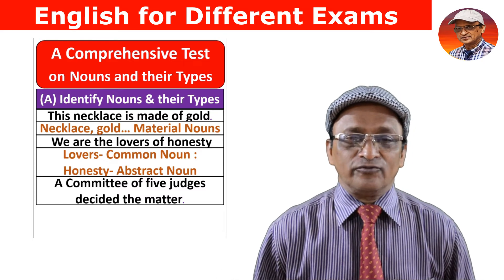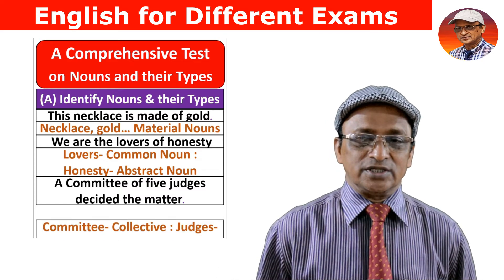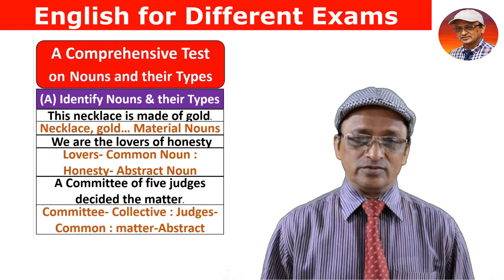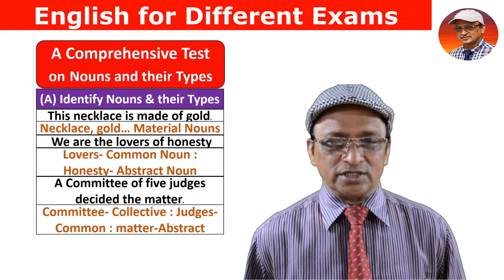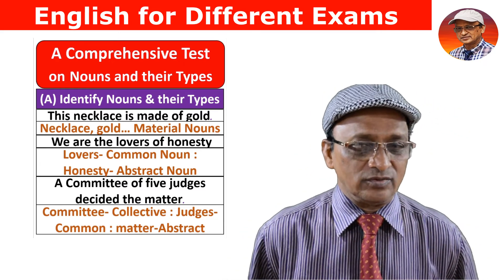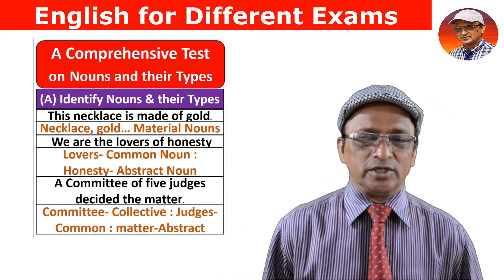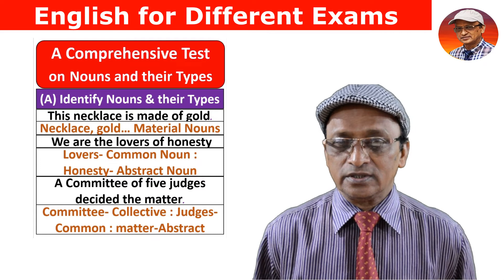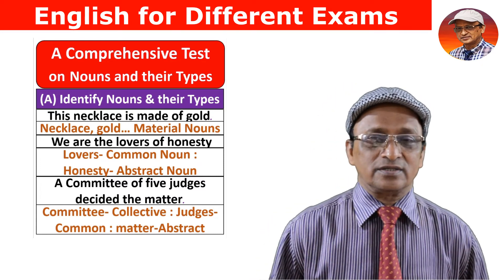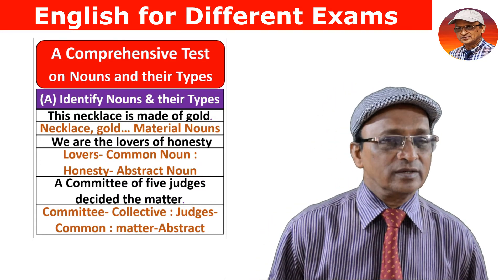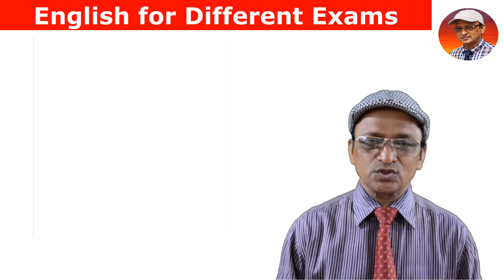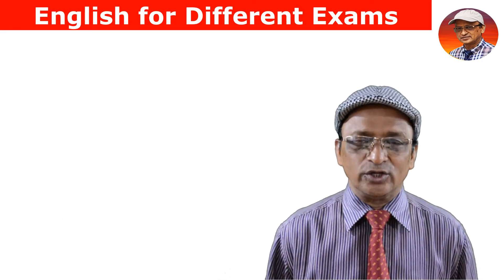Third sentence: 'A committee of five judges decided the matter.' Committee is a collective noun. Judges is a common noun. Matter is an abstract noun.